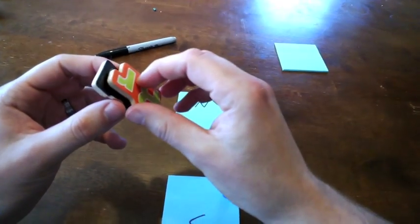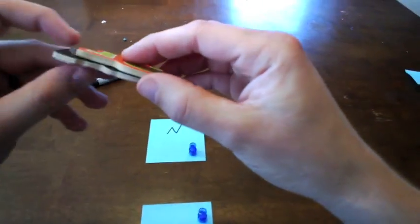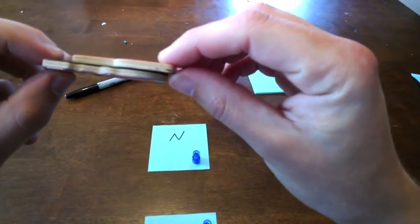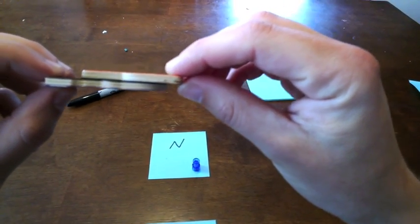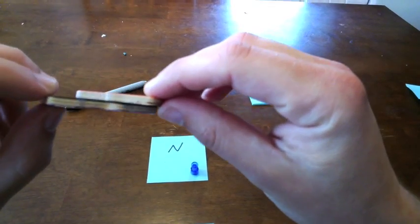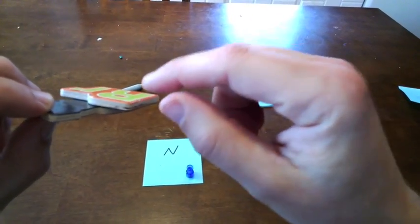The trick to finding where they repel is sliding them along one another. If I slide them this way, I don't really feel anything, but if I rotate these magnets, I start to feel it kind of snap together.